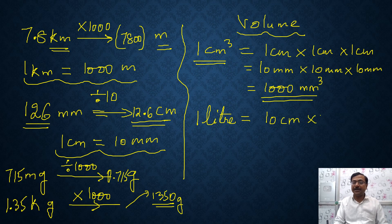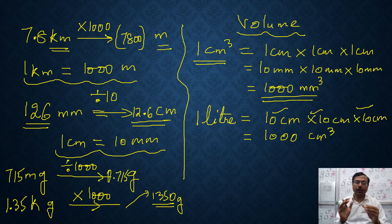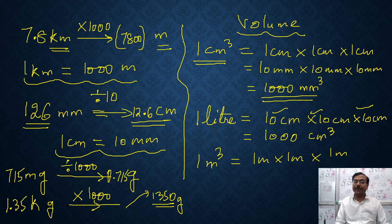1 liter is actually equal to the volume of a cube of size 10 centimeter. So if you multiply 10 centimeter, 10 centimeter and 10 centimeter, you will get 1 liter. And how many centimeter cubes? 10 into 10 into 10 that is 1000 centimeter cube. So 1000 centimeter cube volume is actually 1 liter of volume. And similarly, if you see 1 meter cube, this is actually 1 meter into 1 meter into 1 meter. Now you can convert that into anything.